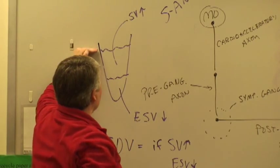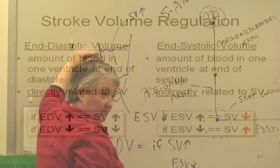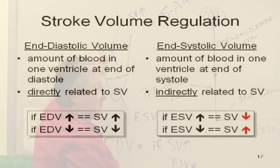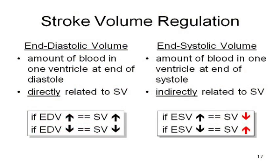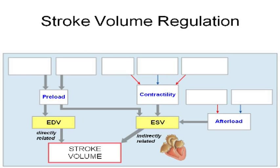The more blood that you started with, the more you have to pump out. So we say end diastolic volume is directly related to stroke volume — you make it go up, stroke volume goes up. End systolic volume is indirect — it's the opposite. So basically, if you alter EDV and ESV, you affect stroke volume.